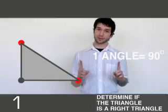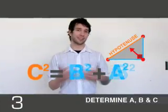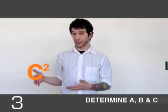Okay, quick recap. Step one, determine if it's a right triangle. Step two, determine the hypotenuse. Step three, determine A, B, and C.